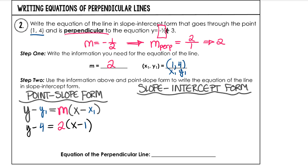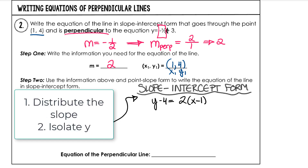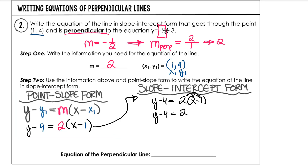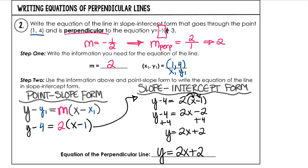Now we're going to use that to get our slope-intercept form. Distribute, then isolate y. 2 times x is 2x, and 2 times negative 1 is negative 2. Then isolate y. This is our slope-intercept form of the line in the form y equals mx plus b.